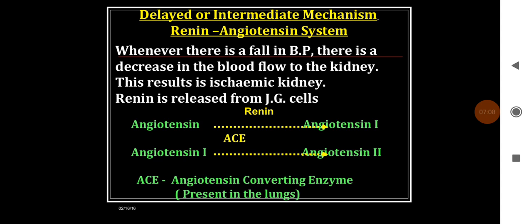In the renin-angiotensin system, whenever there is a fall in blood pressure, there is decreased blood flow to the kidney, resulting in renal ischemia and renin release from juxtaglomerular cells. Also, with hypotension, there is a decreased load of sodium chloride in the renal tubules, which stimulates the macula densa and increases renin production from juxtaglomerular cells. This released renin converts angiotensinogen into angiotensin 1 in the kidney, which is then converted to angiotensin 2 in the pulmonary circulation where abundant angiotensin converting enzyme is present.